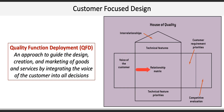The center of the house contains a relationship matrix where the strength of relationships between customer requirements and technical features are articulated. For example, how strong is the relationship between price and value, or between nutrition and size? The right side of the house identifies the level of importance customers rate the desired requirements and provides a competitive evaluation of how effectively the proposed product and the competitor product align with customer importance.